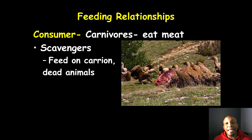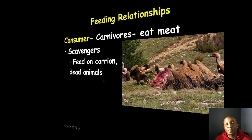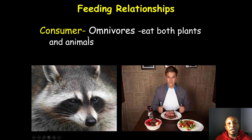The second type of carnivore is the scavenger. The main difference between regular carnivores and scavengers is that scavengers feed on carrion — dead animals — while regular carnivores hunt and feed on living animals.